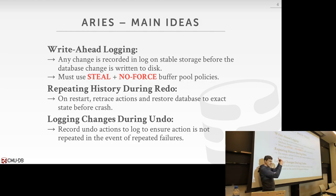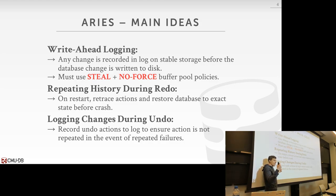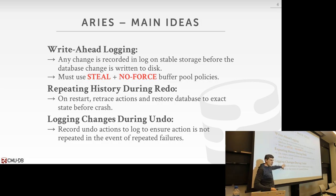Last class I just said, here's all the updates I'm doing, here's the corresponding log records, and then when I aborted I didn't do anything special. So now when we do an aborted transaction — either at runtime or part of recovery — we're going to add extra log records to say here's the change that we are reversing. We're going to need this to ensure that if we crash during recovery, we can recover from the recovery.